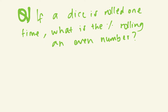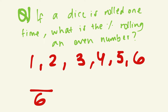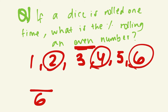The next question says: if a dice is rolled one time, what is the percent chance of rolling an even number? Again, we have six different outcomes: one, two, three, four, five, and six. The denominator will be six outcomes, and out of those we're looking for even numbers.